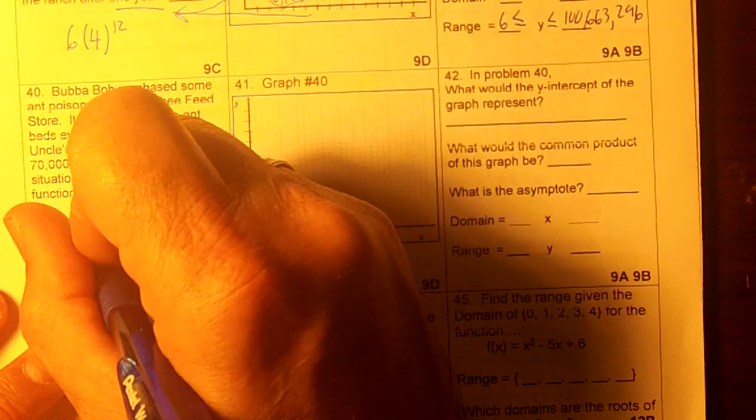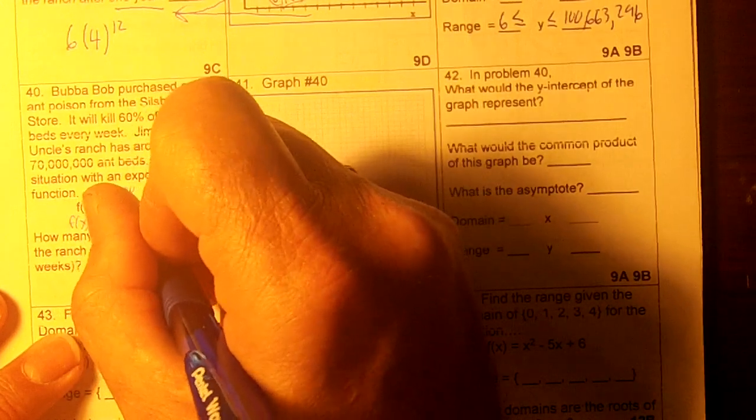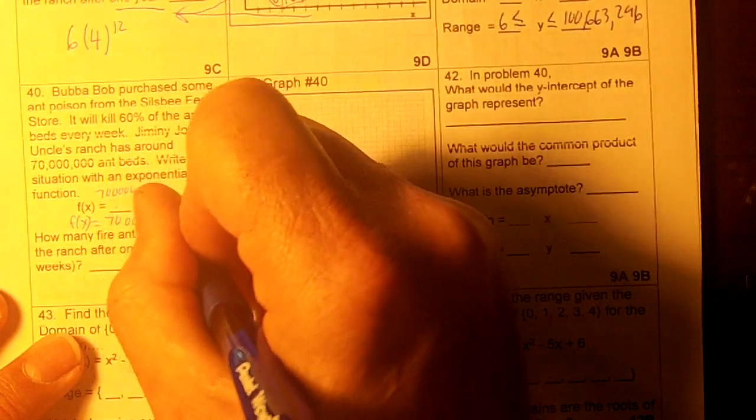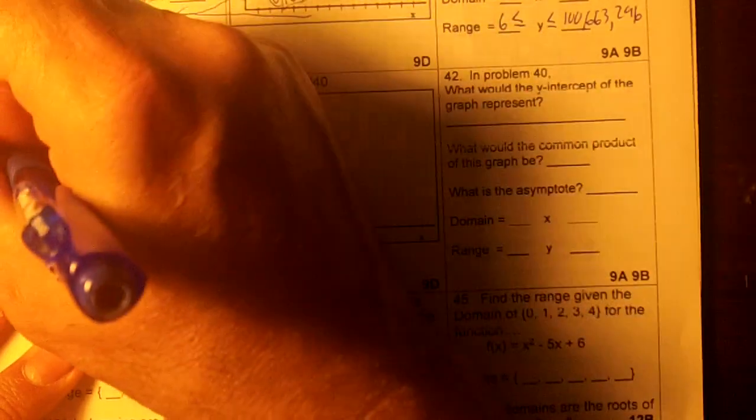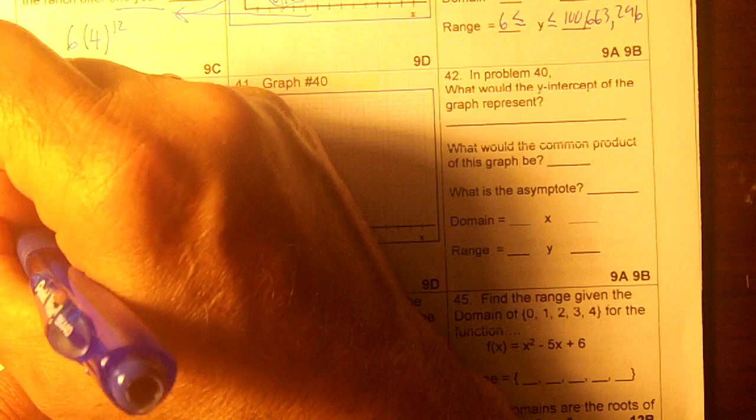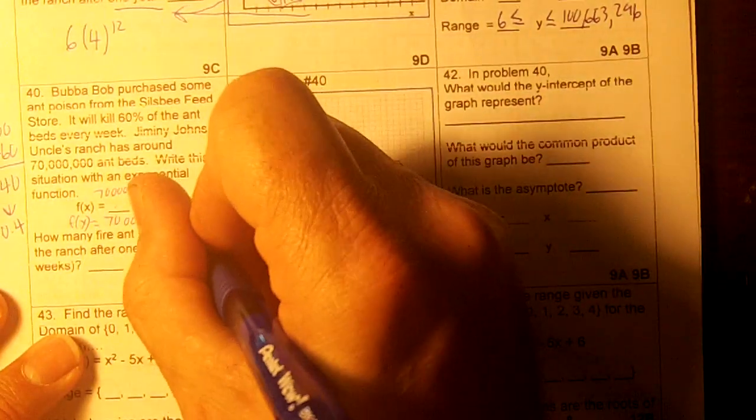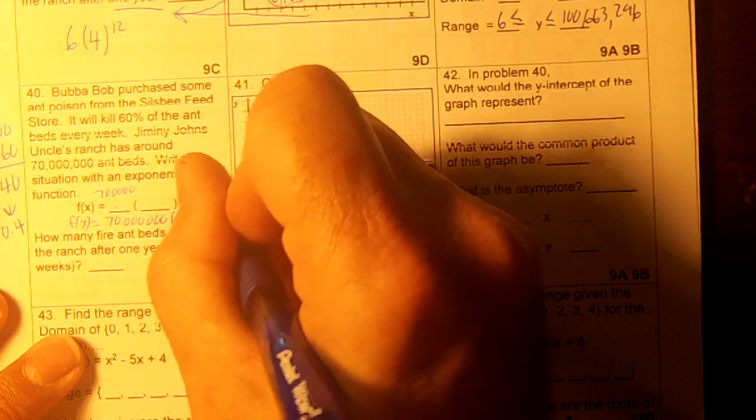Let me do it down here so we can see it better. f(x) equals 70 million, parentheses. Now then, he kills 60%, so we do 100 minus 60 is 40. 40% is left, so the common product will be 0.4, and then to the x.